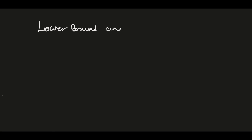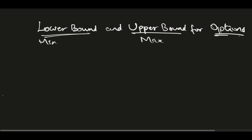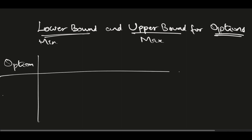Lower bound and upper bound for options — that means minimum value and maximum value for options. So that's what we are going to see here. I'll present one table first which is the outcome, showing you the outcome first, then the proof.